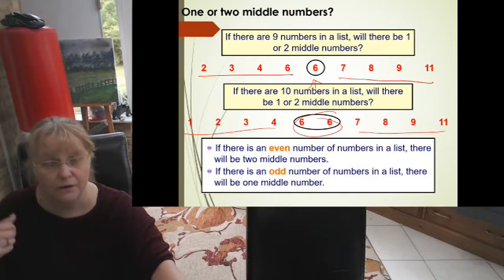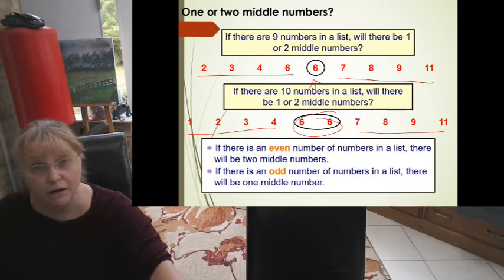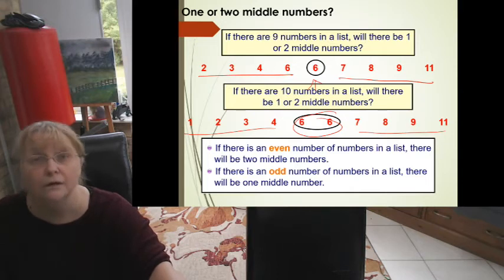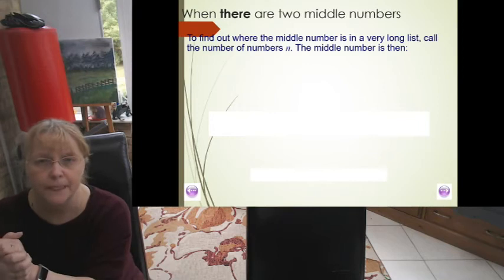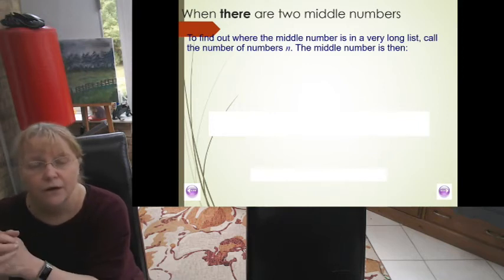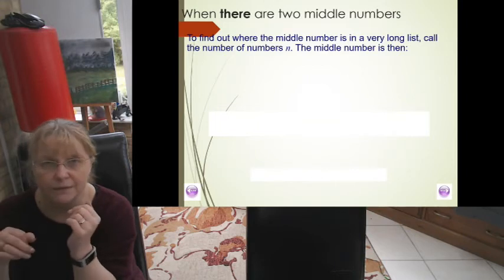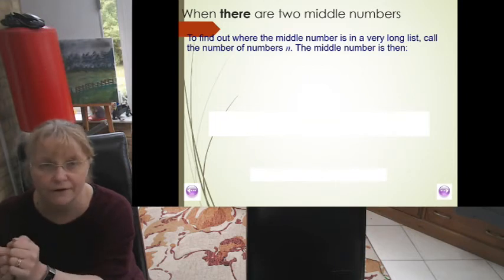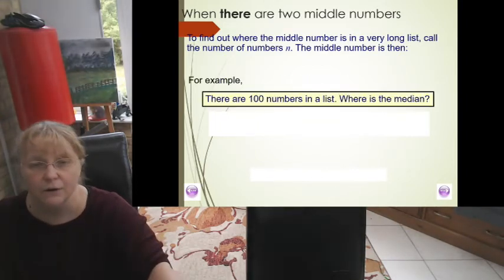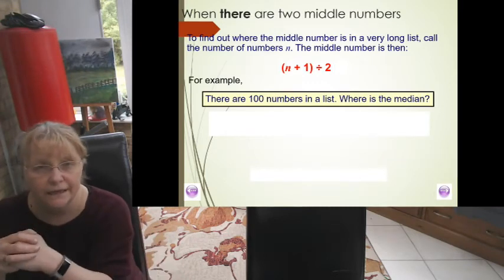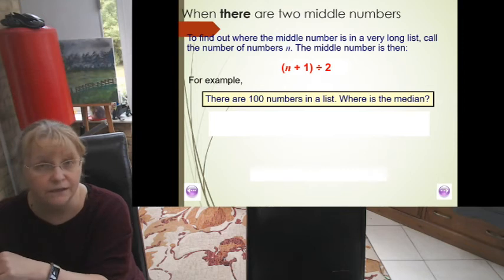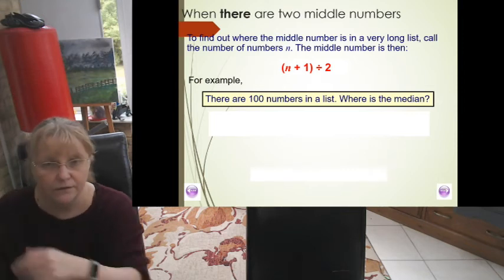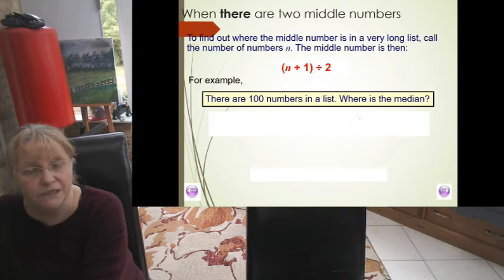So for even numbers, there's going to be two median numbers. For odd numbers, there's going to be one median number. So when there's a graph, it's really hard to write all the numbers out because it will take a very long time. So a good way to remember them is to take the numbers that there are, add one, and divide by two.